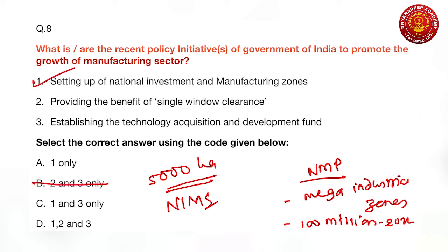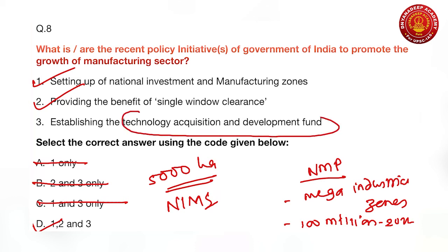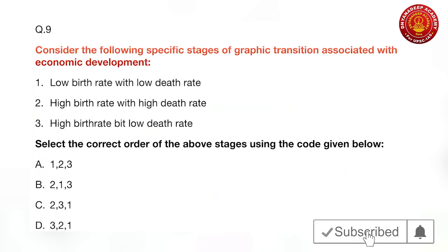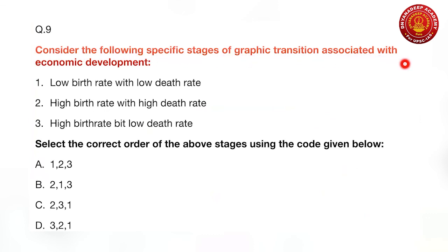Setting up National Investment and Manufacturing Zones is correct as the first statement. Providing single window clearances — meaning all licenses and project clearances at one place without red tape — is also correct as the second statement. Establishing the Technology Acquisition and Development Fund (TADF) is the most important feature of the National Manufacturing Policy of 2012. With all three correct, the answer is D — one, two, and three.